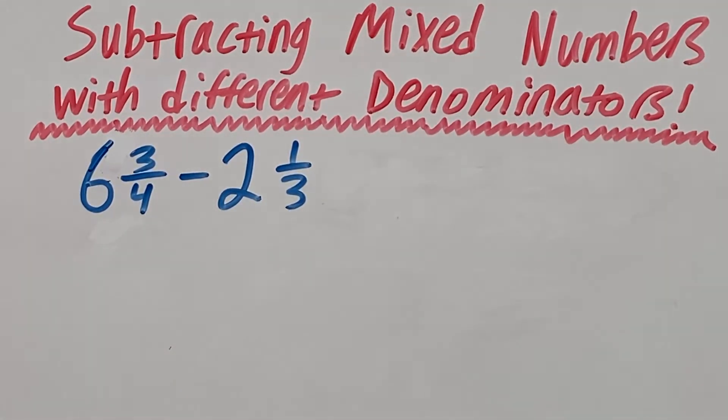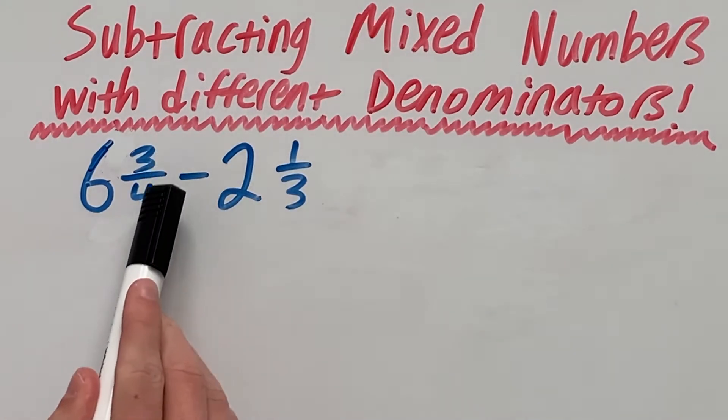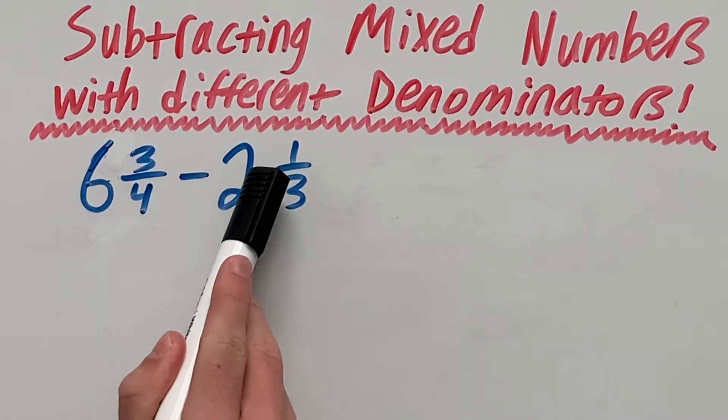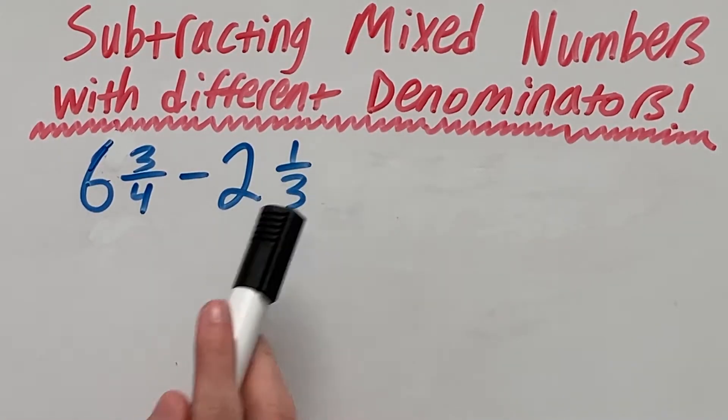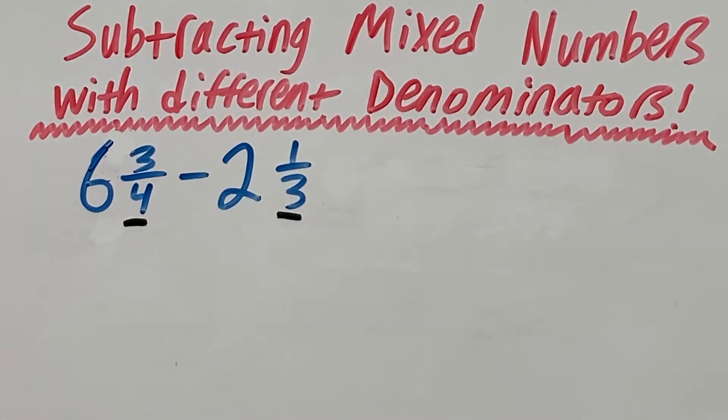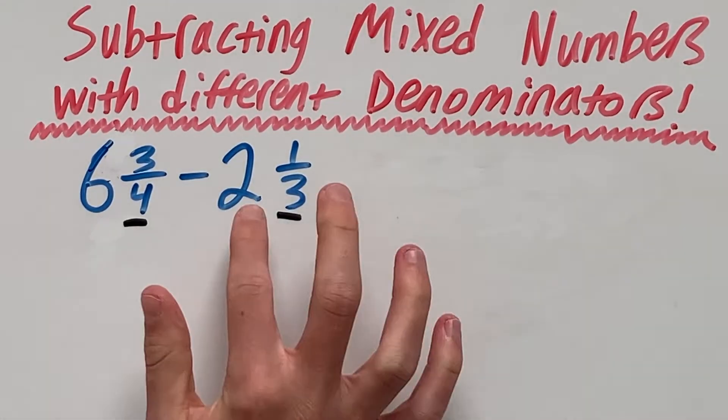So here we're going to look at the example 6 and 3 fourths minus 2 and 1 third, where our denominators are different since one is 4 and one is 3.